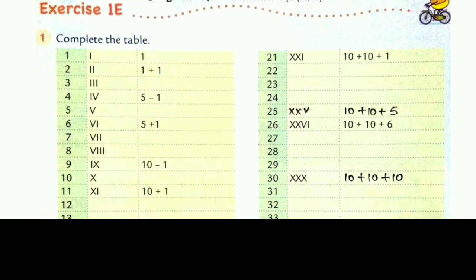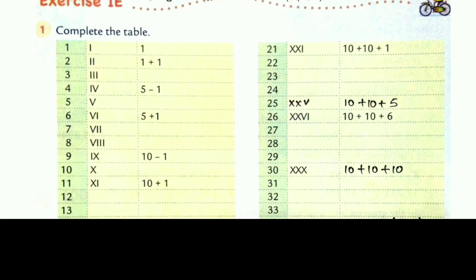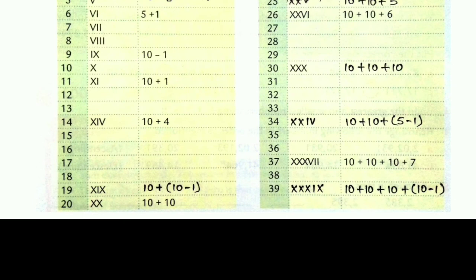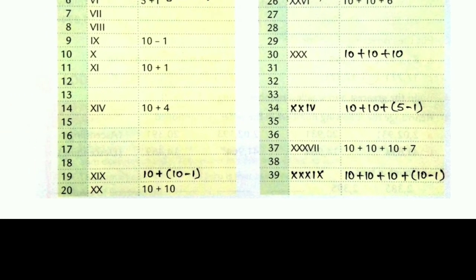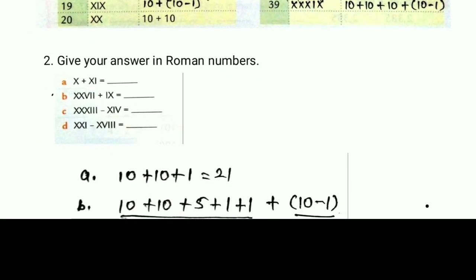Complete this table. 1 means I, we will write as I. 2 means I and I, 1 plus 1. 3 means I, I, and I. So you will write as 1 plus 1 plus 1. Few questions I have solved in this table. You can see. Rest questions, do it in your book.